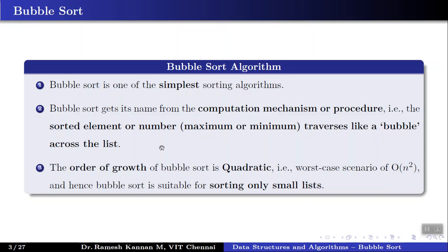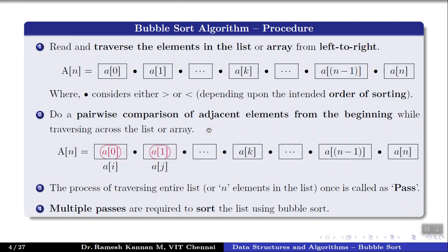Let's discuss the actual procedure or computational mechanism of the sorting algorithm. The first step is to traverse the elements from left to right. We consider an array of n entries and traverse from left to right. During the traverse, it checks whether a particular element is greater than or less than the next one, depending on the sorting requirement. This is a pairwise comparison — for example, comparing a[0] and a[1], checking whether a[0] is greater than or less than a[1]. Based on the requirement, elements get swapped.